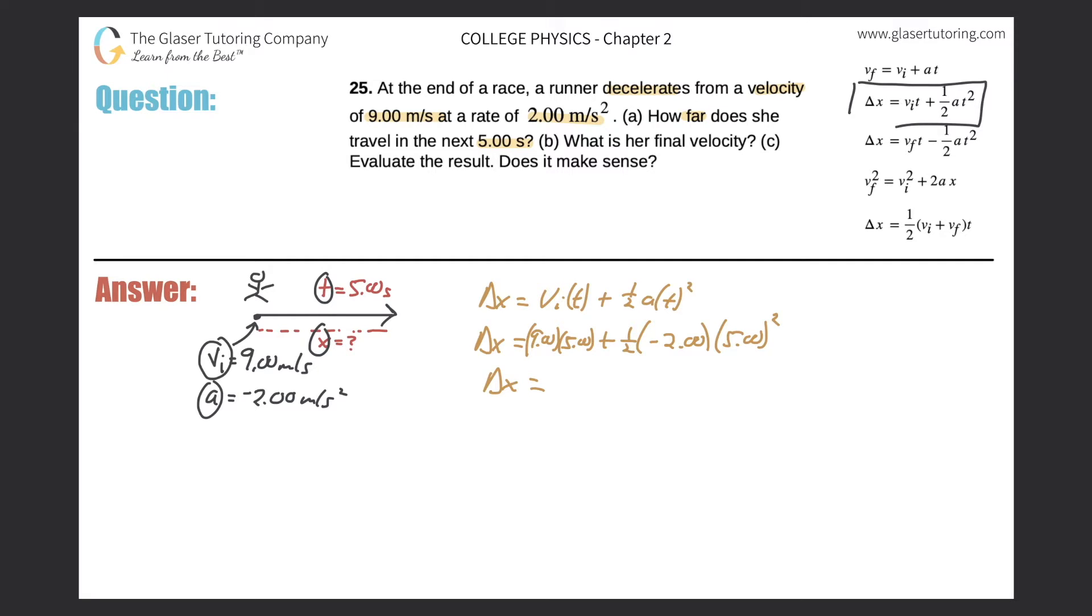Alright, so let's just now plug this all into the calculator. So nine times five, you might not need to do that, right? In the calculator, nine times five is 45. Now add to that one half times negative two times five squared. Okay, and that comes out to be negative 25, right? And now let's add them together.